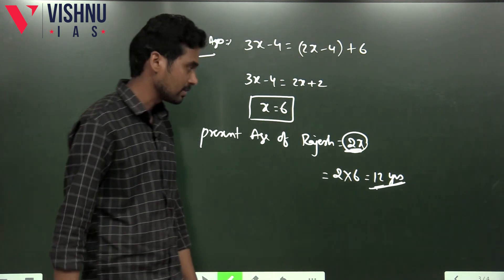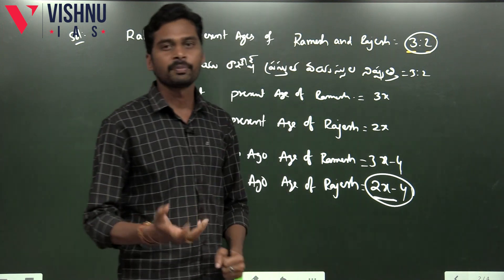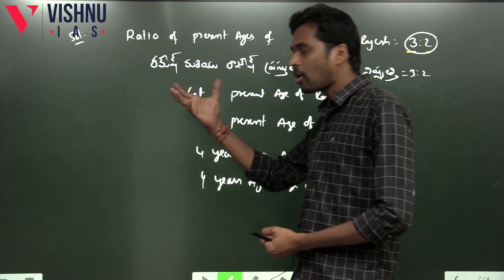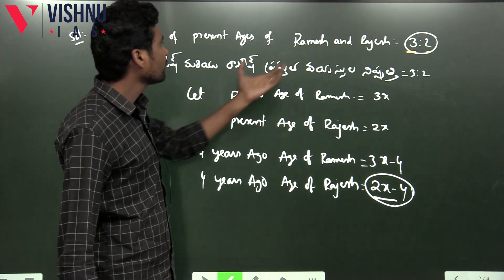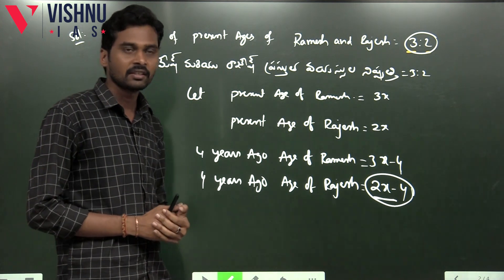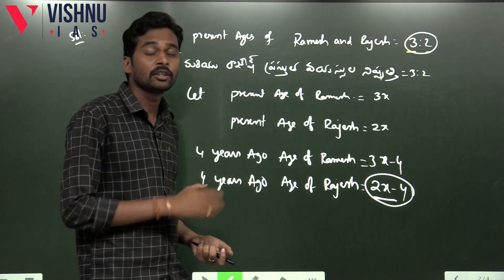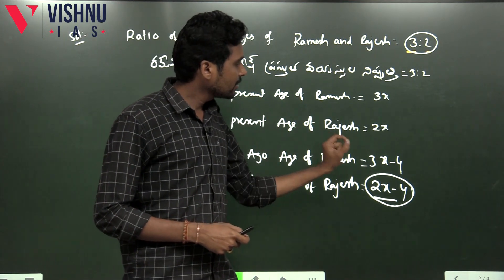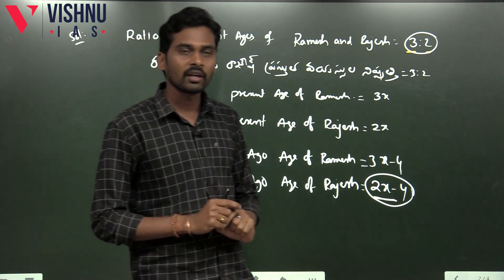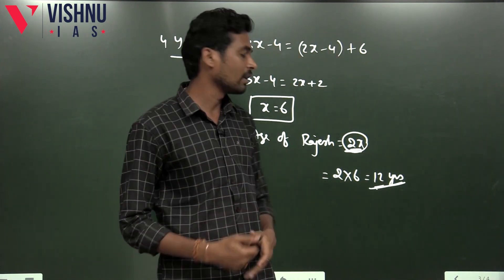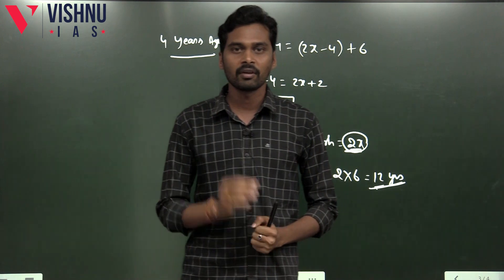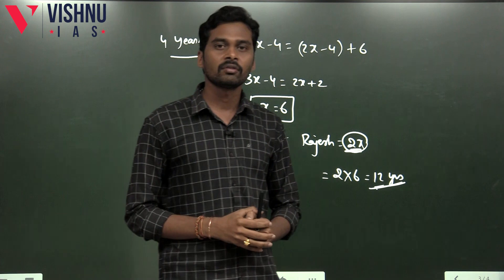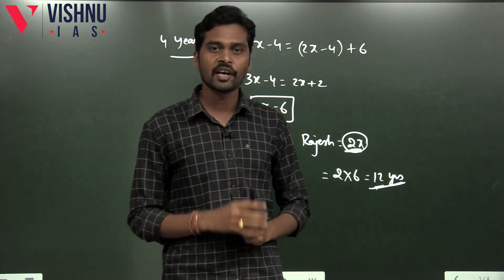So this is the final answer. We have to mark these steps clearly. The present age of Rajesh is 12 years. We have to draw and detail the steps. If you have doubt, you can verify: if 3x minus 4 and 2x minus 4 — the answer is 12 years. If you follow the working model, you get full marks. Even though there are 2 marks, every mark is important.